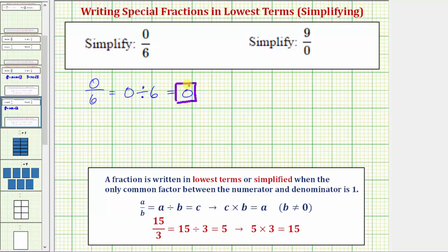To check this quotient, we can always form the corresponding product, which is formed in the opposite direction. If zero divided by six equals zero, then zero times six must equal zero, which is true.